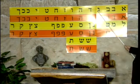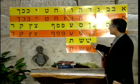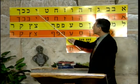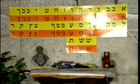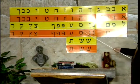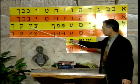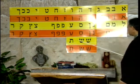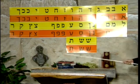Aleph, Bet, Gimel, Dalet, He, Vav, Zayin, Chet, Tet, Yud, Kaf, Lamed, Mem, Nun, Samech, Ayin, Peh, Tzadik, Kuf, Resh, Shin, Tav. And that's the end of it. A little song to help you remember the Hebrew letters.